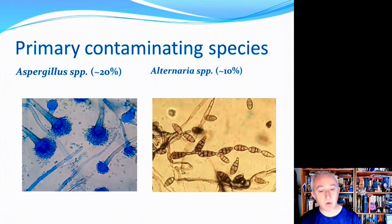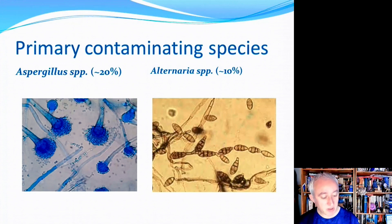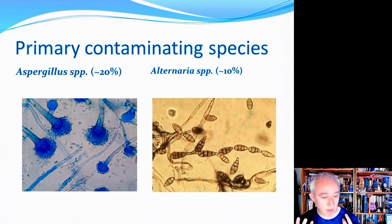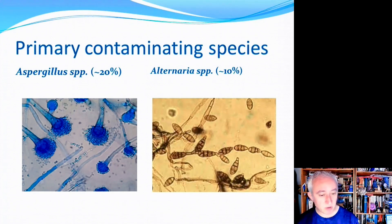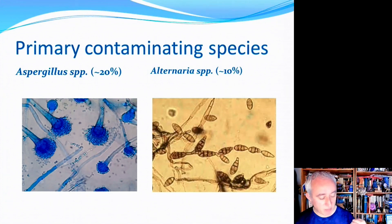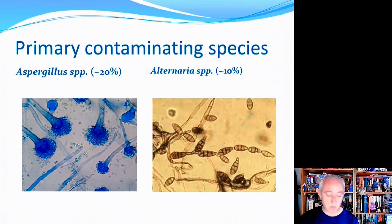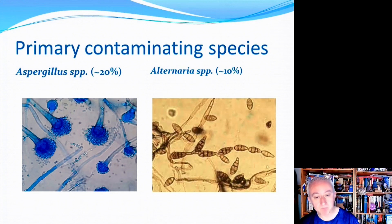In fourth place we have Alternaria, a fungus that can cause allergic reactions in people. Certain individuals can have chest infections triggered by Alternaria, and it can be linked to hypersensitivity reactions sometimes leading to asthma. Alternaria can be found indoors or outdoors, but it's less likely to be living within the fabric of the facility — more likely it arrives via a transfer event or through the HVAC system.